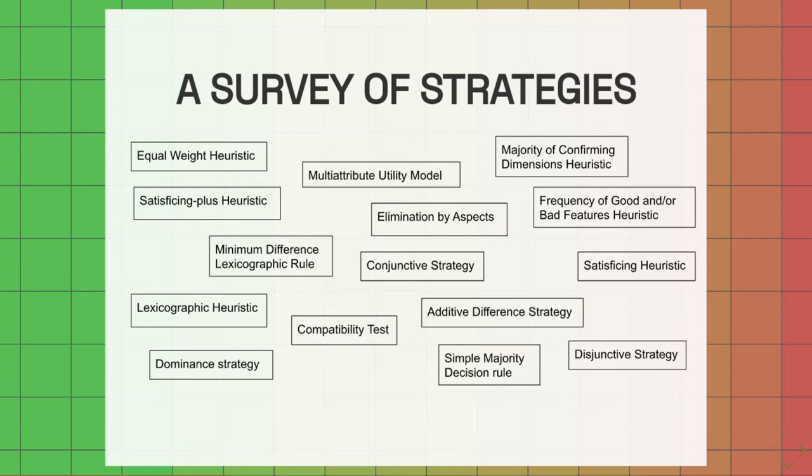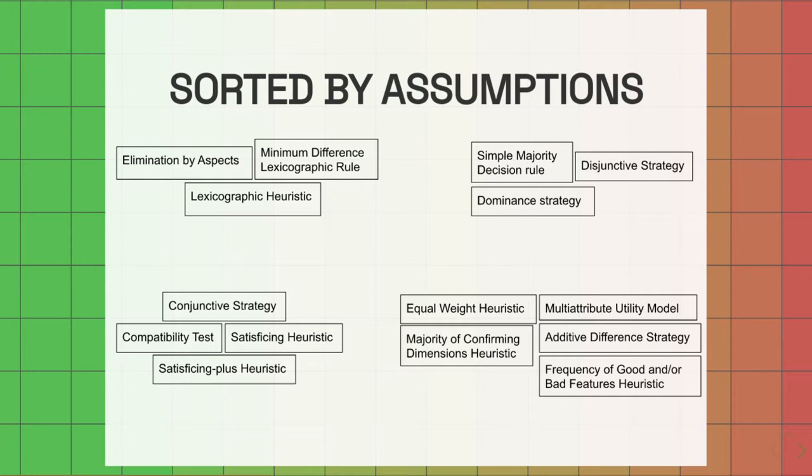My approach to solving this issue has been to categorize each of the different strategies based on some of their assumptions of the processing that underlies that particular strategy. Some strategies assume a very serial processing of the attributes, one attribute after the other. Others assume that attributes are processed in parallel at the same time. Some assume that the information is integrated early into a utility per option, which is then assessed between options. Other assumptions may be whether all the information needs to be processed before the final choice, an exhaustive processing of options and alternatives.